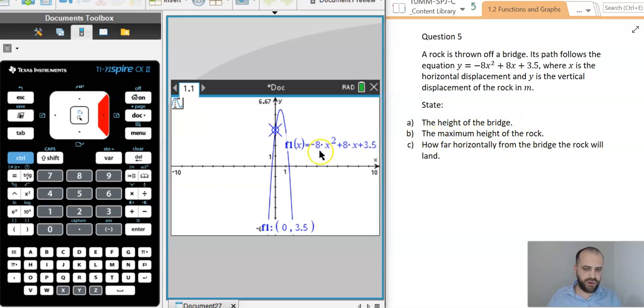Now, we want the maximum height of the rock. Let's see what our trace does. There we go. We just moved across and we traced, and we got 0.5, 5.5. I'm going to show you a second way to do that, just in case trace doesn't give it to you. So, 0.5, 5.5 for that answer there.